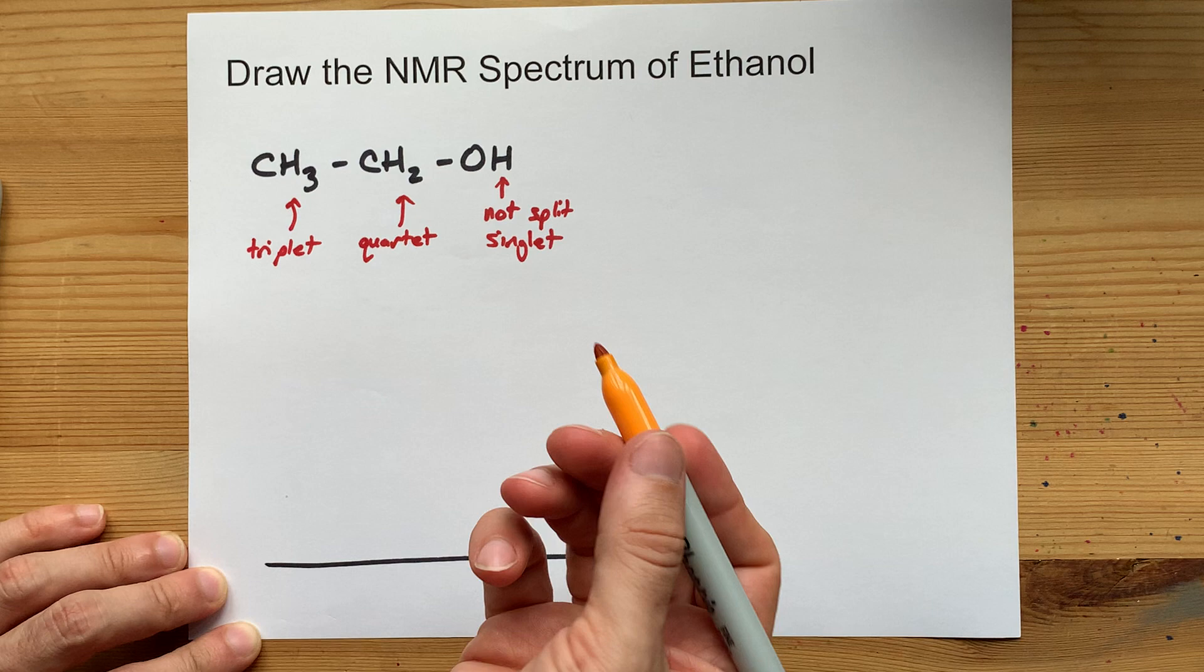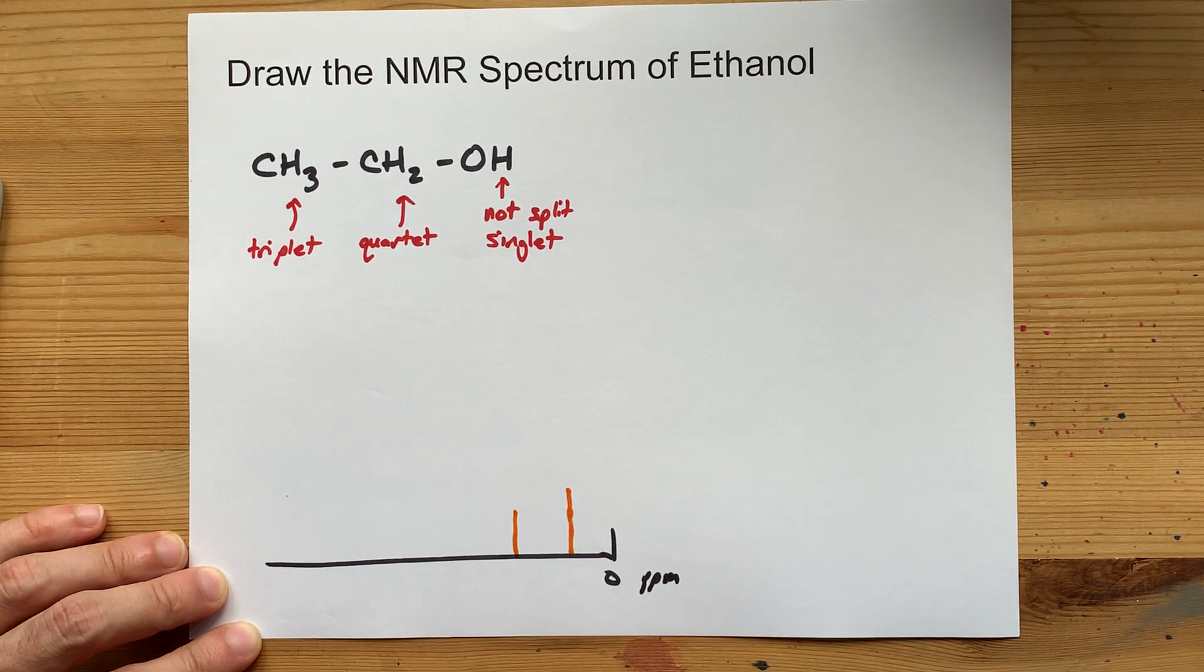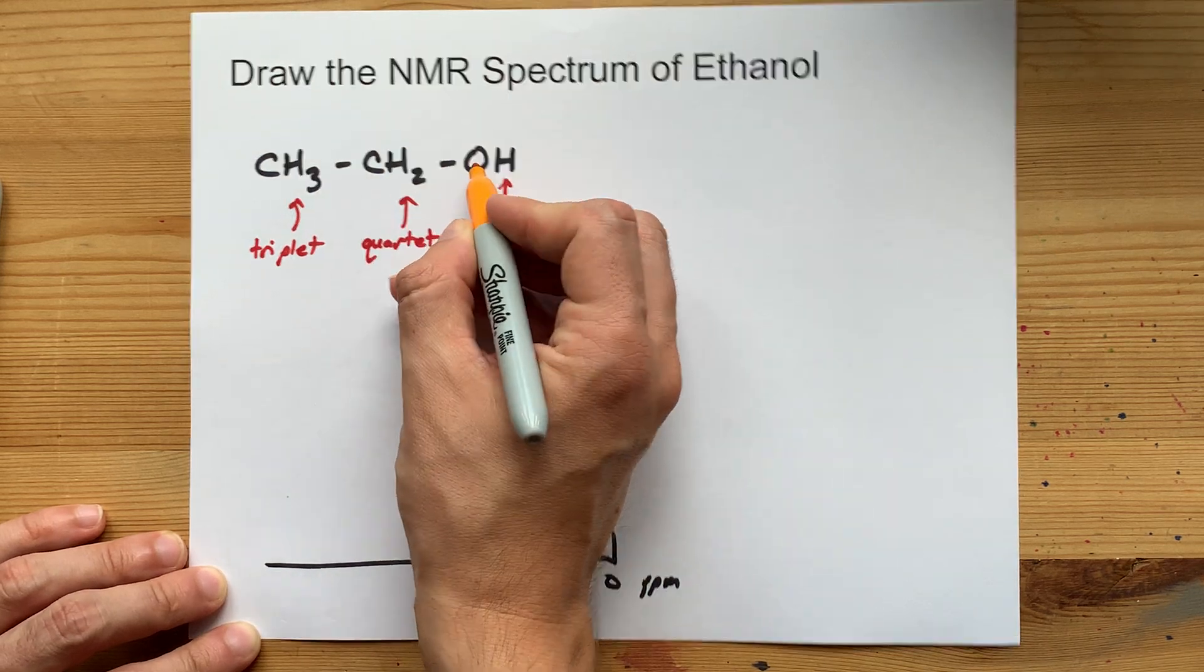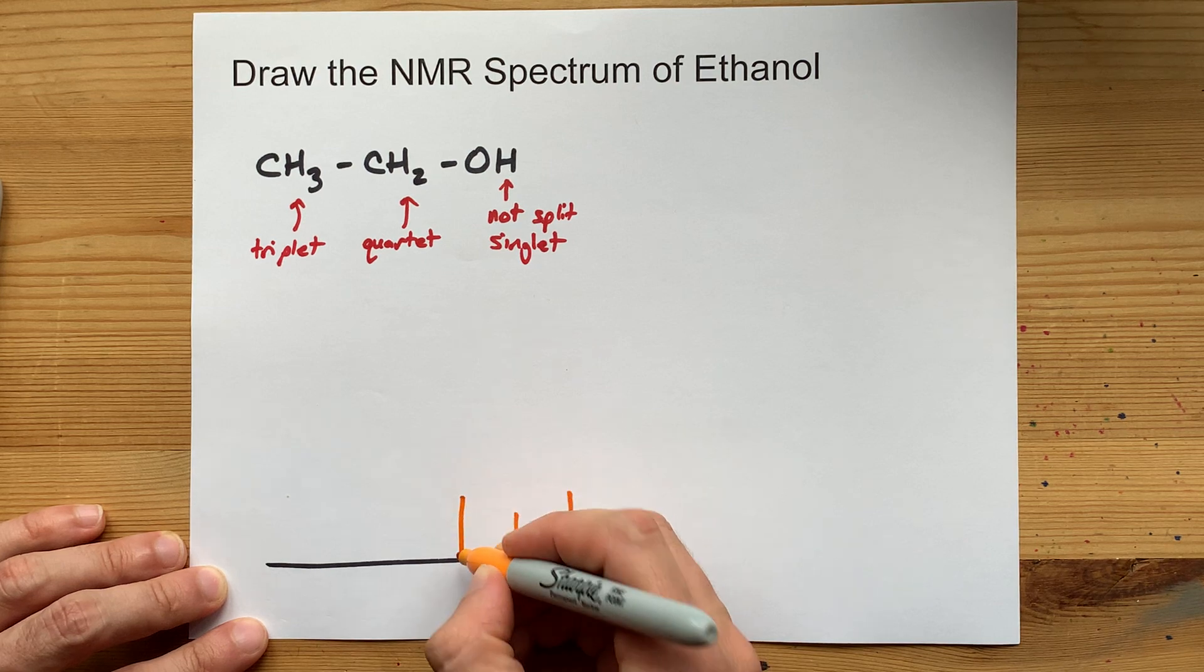Now, the H, I'm just going to tell you, is somewhere at 2.6. So I'll put it there. And then this one is kind of close to the oxygen, but isn't the alcohol proton. So it's going to appear somewhere here.